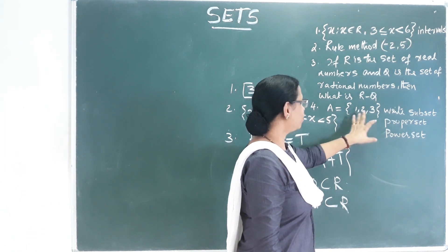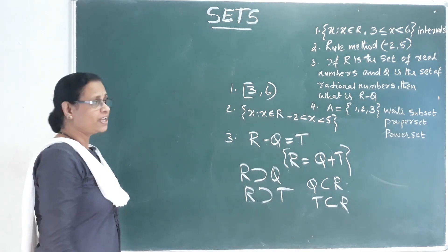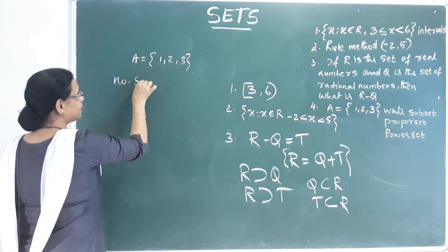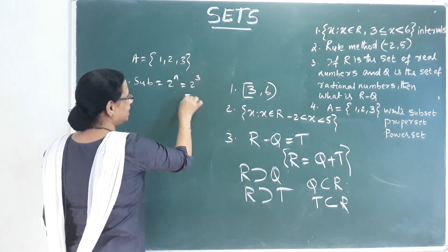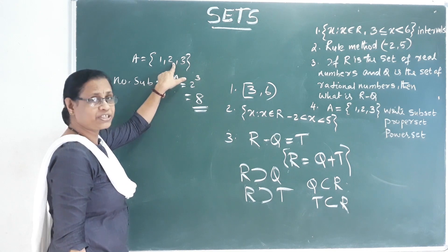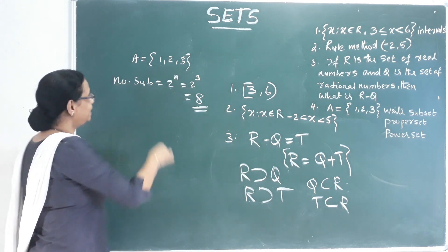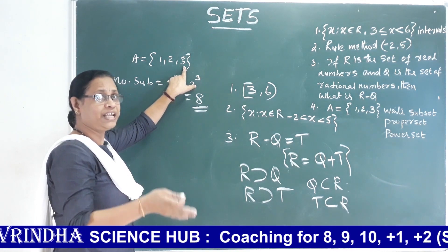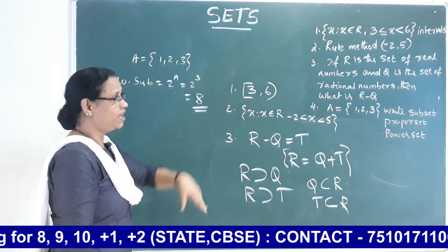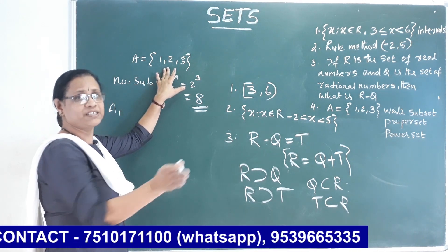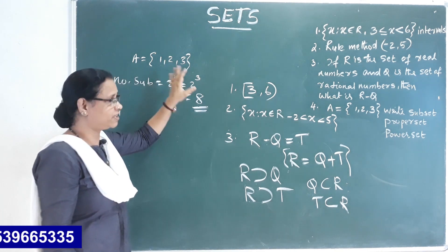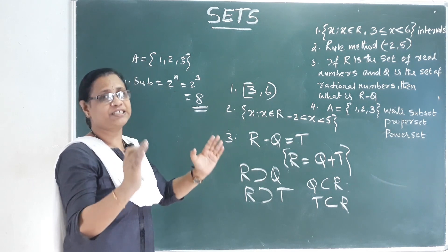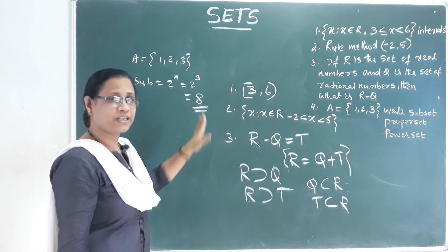Next question: A = {1, 2, 3}. Write the subset, proper set, and power set. Number of subsets = 2 raised to n = 2 raised to 3 = 8. The 8 subsets are: {1}, {2}, {3}, {1,2}, {2,3}, {1,3}, {1,2,3}, and the null set. Proper set: subtract the same set — that gives 7 proper sets. Power set: all 8 subsets listed as a set of sets.